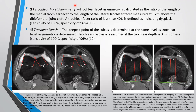Second is trochlear facet asymmetry. We measure the ratio of the length of the medial trochlear facet to the length of the lateral trochlear facet, measured at 3 cm above the tibiofemoral joint cleft. A trochlear facet ratio of less than 40% indicates dysplasia, with a sensitivity of 100% and specificity of 96%. We divide the medial facet length by the lateral facet length; if it is less than 40%, it indicates dysplasia.